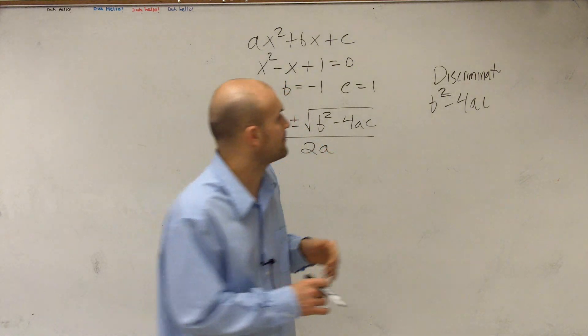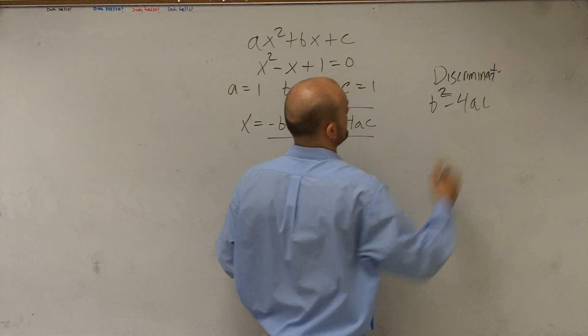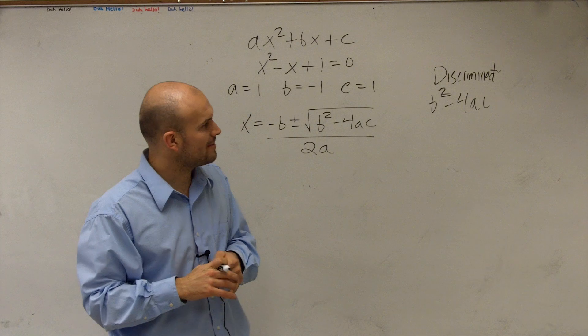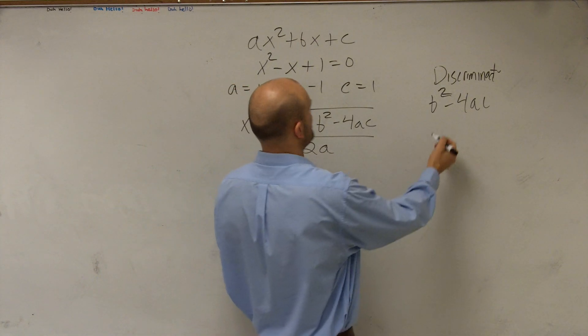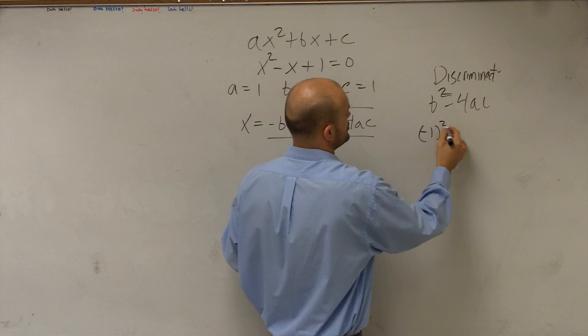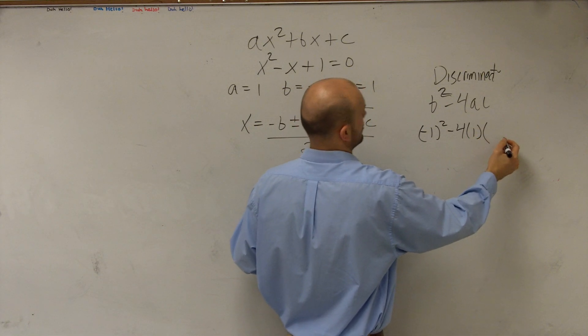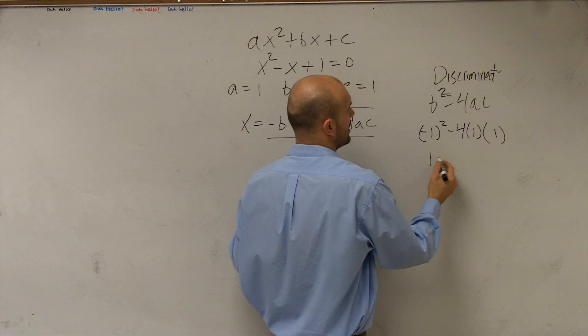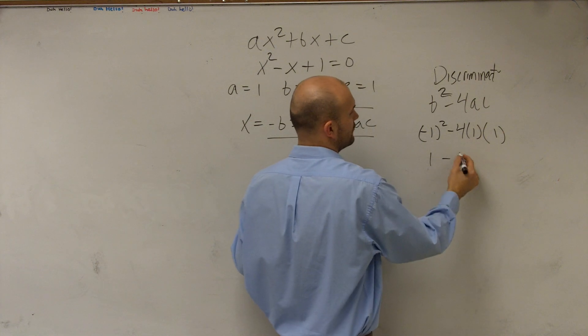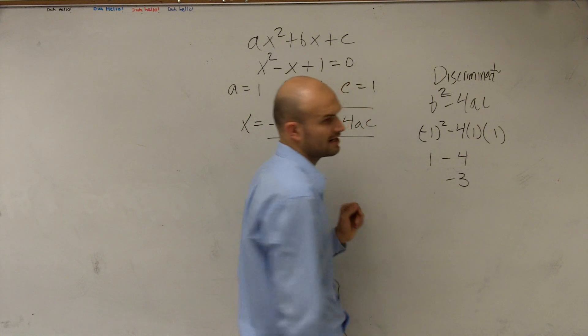So when looking at this, I have b squared minus 4 times a times c. I plug in my b, which is negative 1 squared minus 4 times 1 times 1. So I get 1 minus 4, which is going to give me a negative 3.